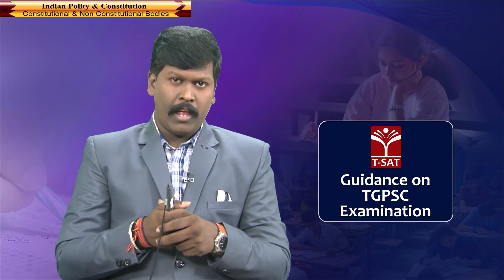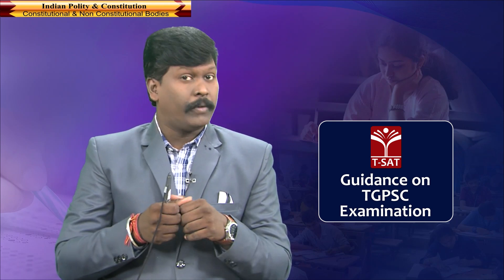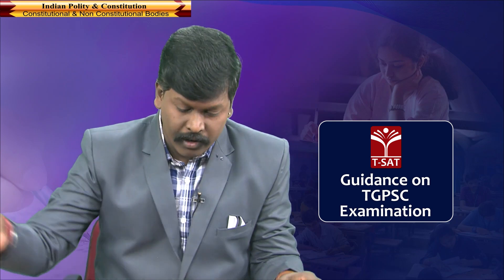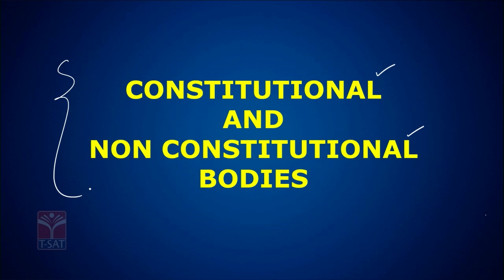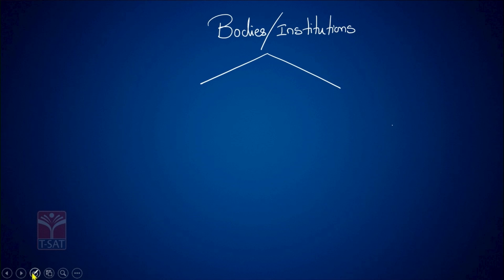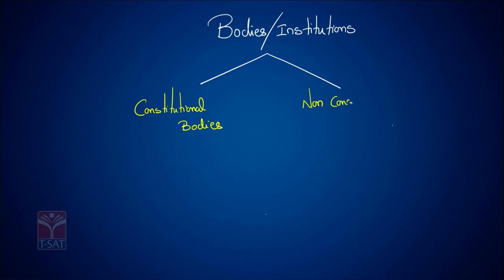In this class, we will see the last and final important concept in Indian Polity, and that is constitutional and non-constitutional bodies. These bodies or institutions are generally divided into two types: the first one is called constitutional bodies, and the second one being non-constitutional bodies.